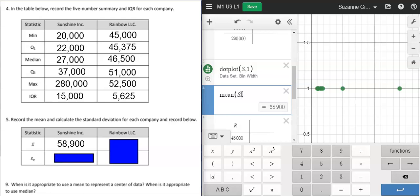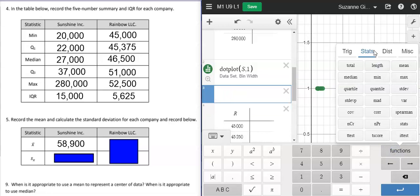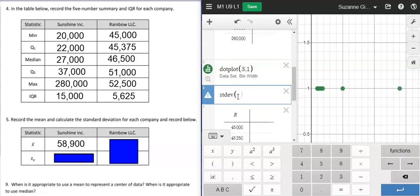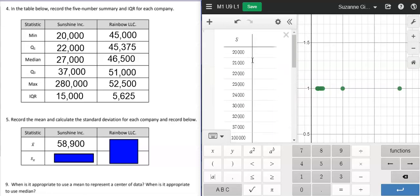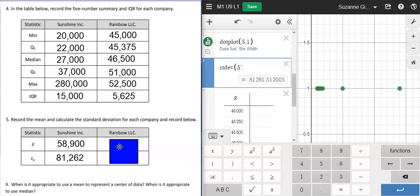To get the standard deviation, I'll delete this out, go to function and standard deviation is right here. And I'll just type the S to make sure it's getting the standard deviation of my data that I labeled with an S. For Rainbow, I would do the exact same steps.